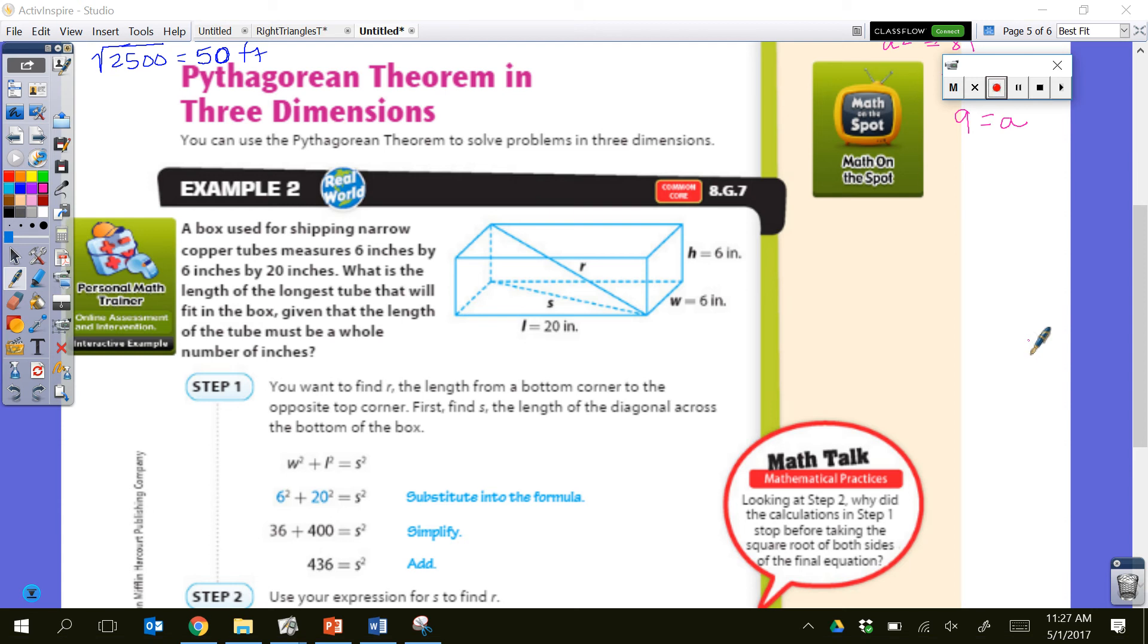All right, Math 8 students, we are continuing with lesson 12.1. We're looking at example two, which is the Pythagorean theorem in three dimensions. You can use the Pythagorean theorem to solve problems in three dimensions. So we're going to go through this example here, and then we're going to have one that we need to talk about.